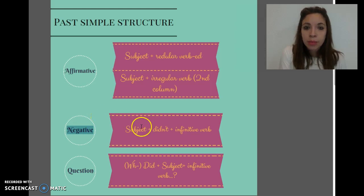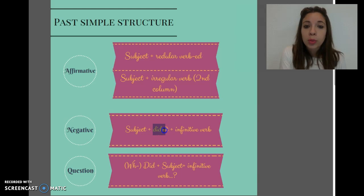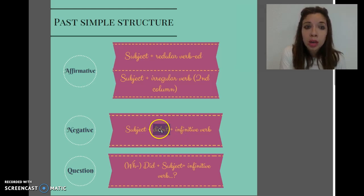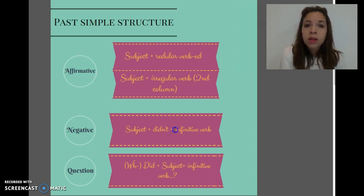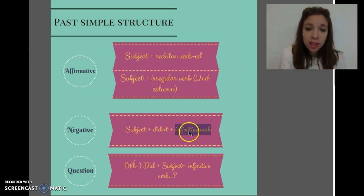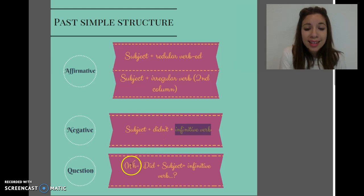When you want to make a negative in the past simple, it's even easier. The only thing you have to put is the auxiliary "did" plus "not", so the contraction is "didn't". Remember that when you use the auxiliary, you don't need to put the verb in the past anymore — only put the verb in the infinitive, without "-ed", "-ing", or any other endings.